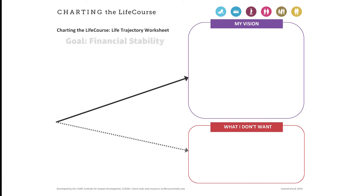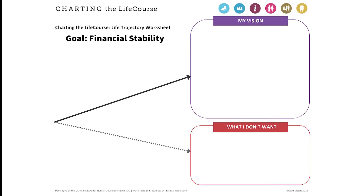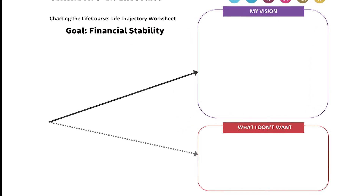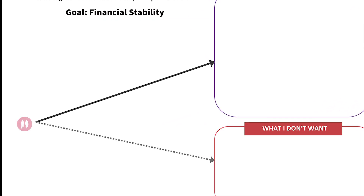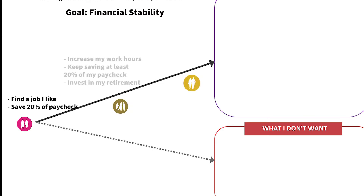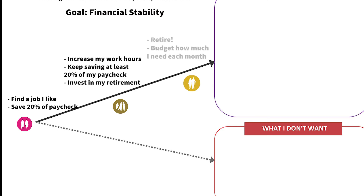For example, if you're working with an individual who is using this tool to map the steps to financial stability, you start at the life stage the individual is currently in. These life stages shift as a person ages — for example, a young adult may focus on earning, while an older adult may focus on retirement.